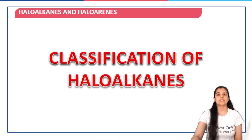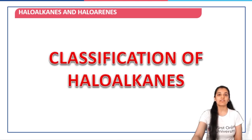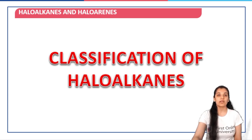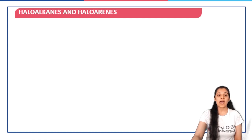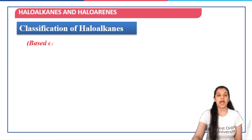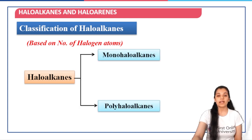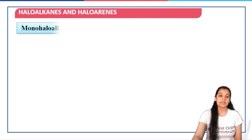Let us first discuss the classification of Halo Alkanes and then we will move on to the classification of Poly Halo Alkanes. As is clear from the word, poly means it contains more than one halogen atom. We can classify Halo Alkanes based on the number of halogen atoms — these could be Mono Halo Alkanes or Poly Halo Alkanes.